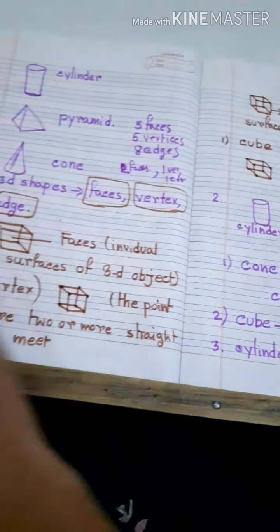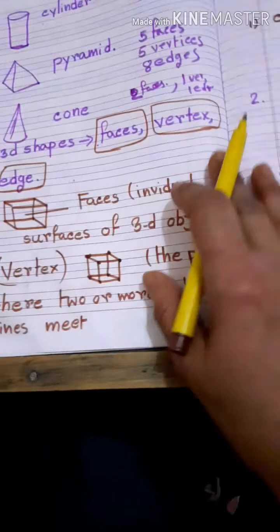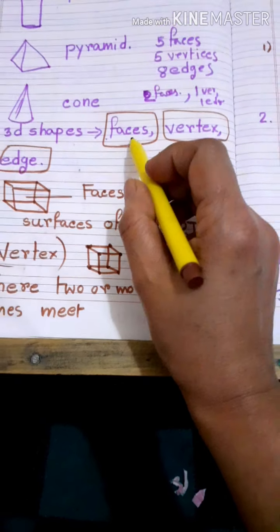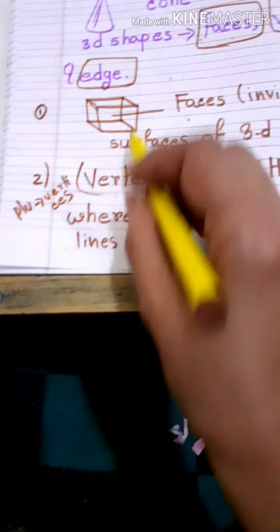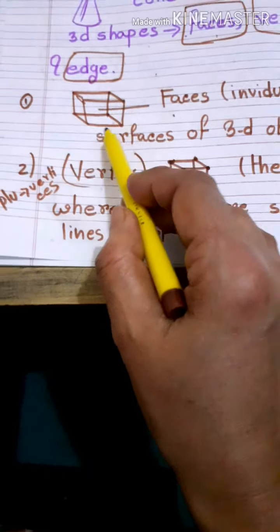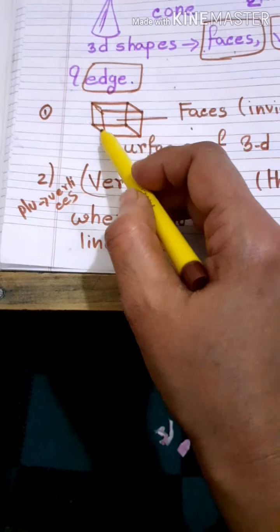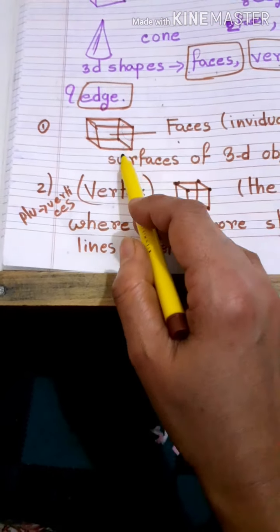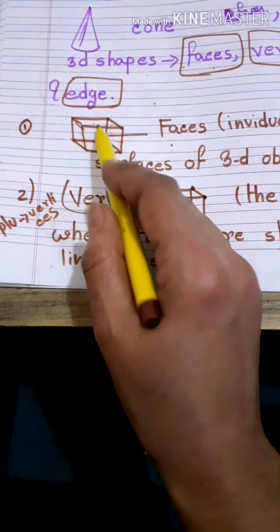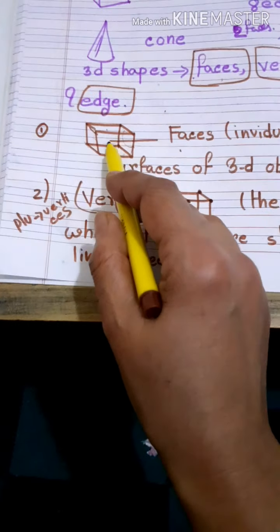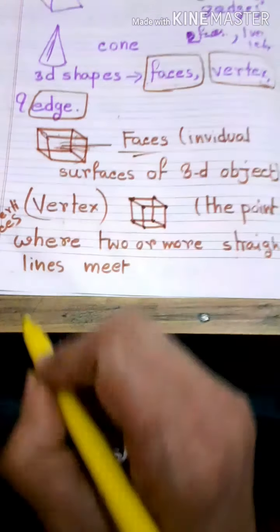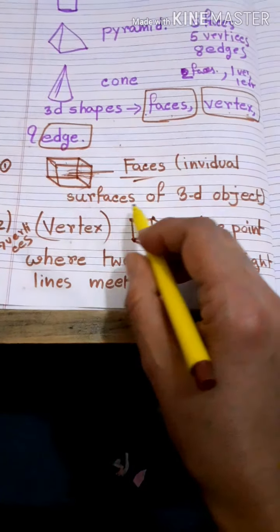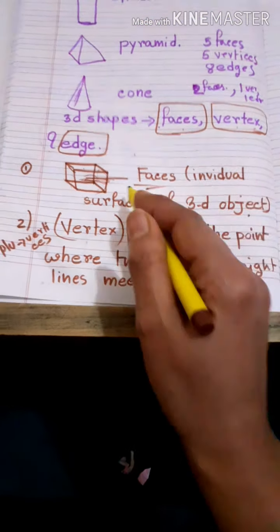Next, 3D shapes have faces, vertices, and edges. What is called faces? When I draw this cube, each side is one square — this one, one square; this one, one square; this side, one square; this side, one square. Each and every wall is called a face. The individual surface of a 3D object is called a face.